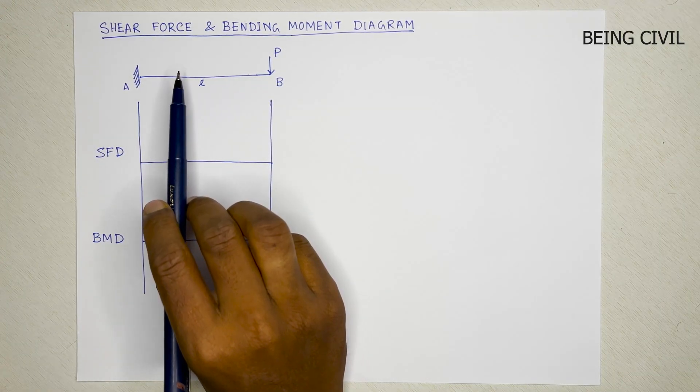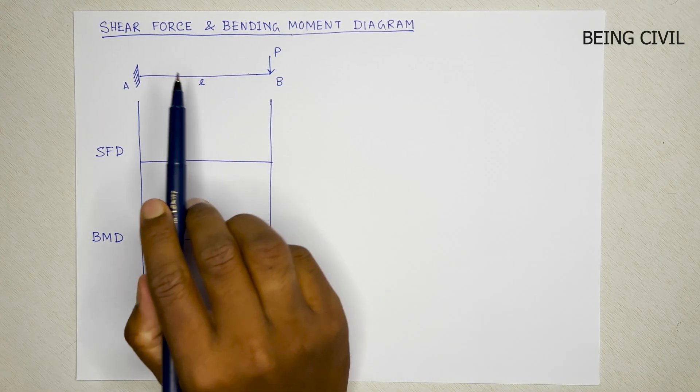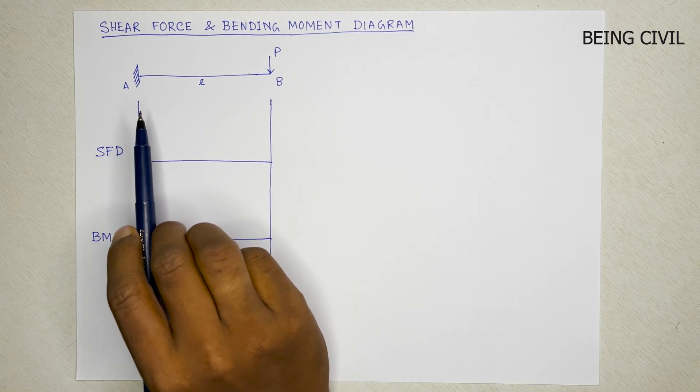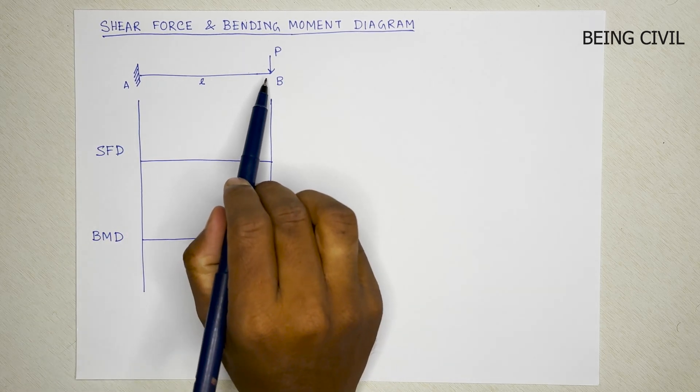Hello everybody, welcome to Being Civil. In this video, I will show how to draw shear force and bending moment diagram of a cantilever beam with a point load P at the free end.